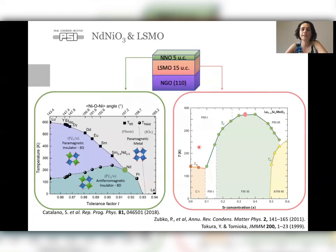Here I have the phase diagrams for these two systems. On the left, the phase diagram for NNO. Here is temperature, on the bottom is the tolerance factor, and here is the nickel-oxygen-nickel angle. The tolerance factor gives you an idea of how far you are from the symmetric cubic perovskite structure.